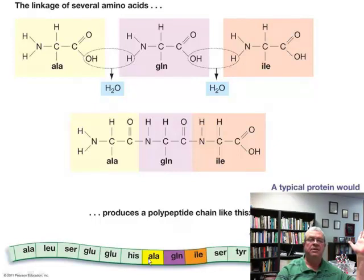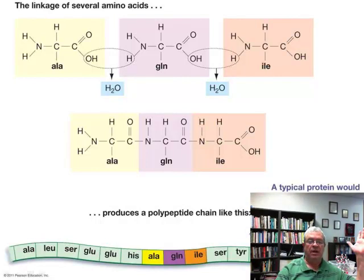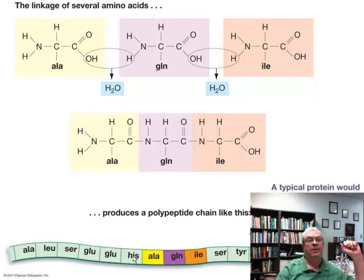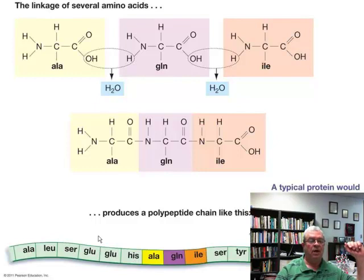They represent the subunits of a protein, which would be amino acids. So this represents amino acids joined together. And how many amino acids are joined together in a typical protein? Well, the smallest one would have about 100, and big ones have many hundreds.